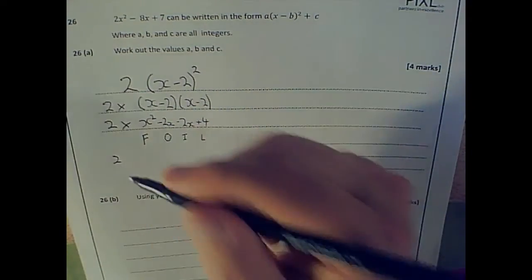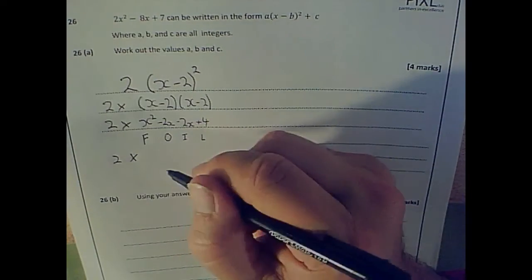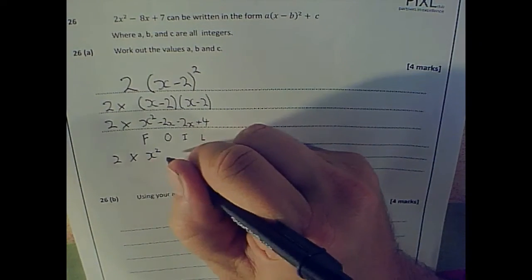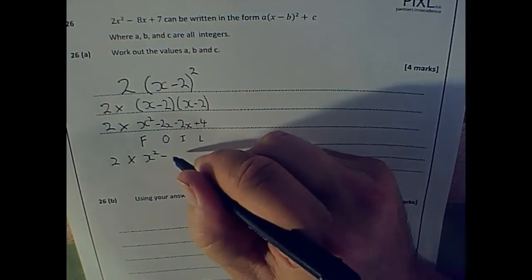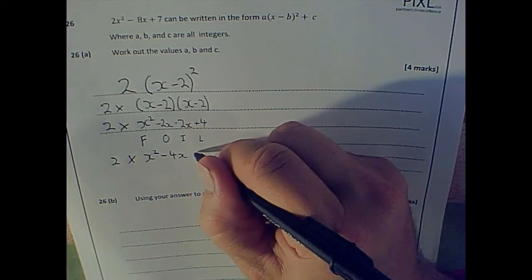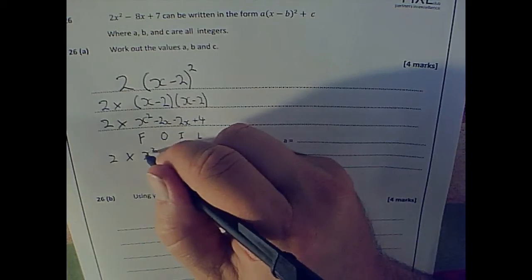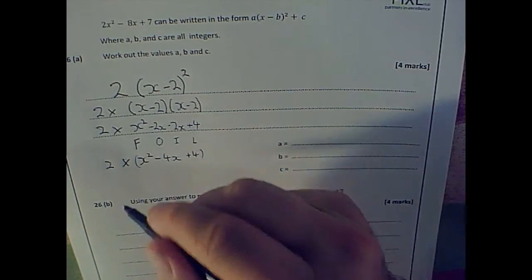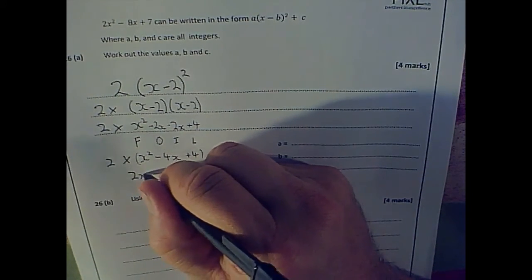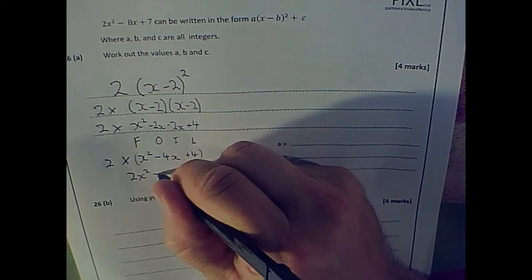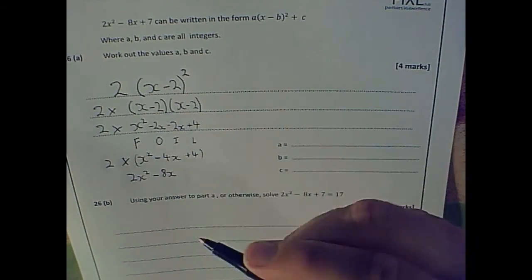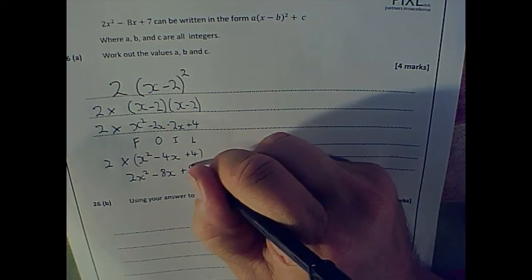So I've got 2 times by x squared minus 4x plus 4, which is the same as, if I do this 2 times by all that, I've got 2x squared minus 8x plus 8.